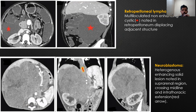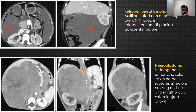Another case showed a large heterogeneous lesion displacing the vascular structures, with evidence of intrathoracic extension displacing the right kidney inferiorly. There was non-visualization of the suprarenal gland, giving an appearance of a phantom organ sign in a case of neuroblastoma.